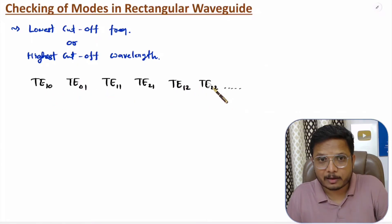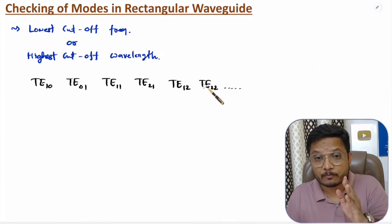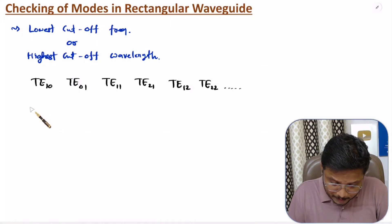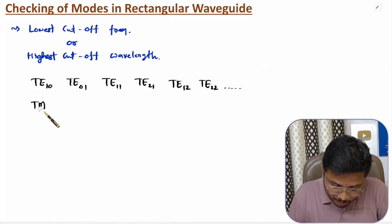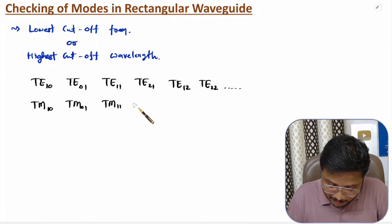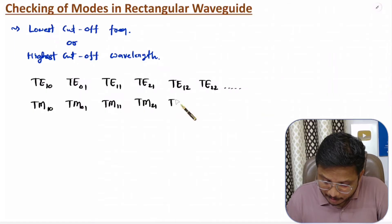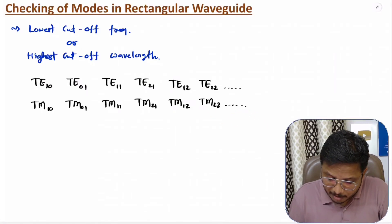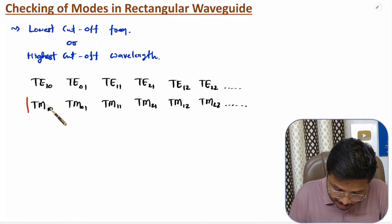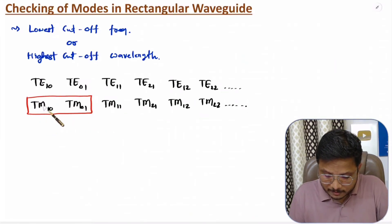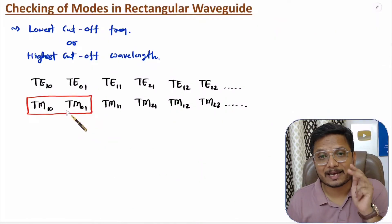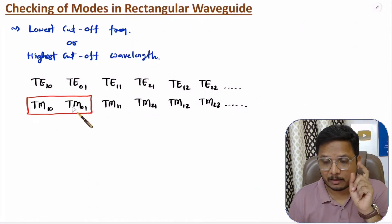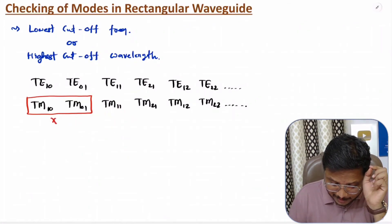The same ordering applies for TM modes, but there are important basics to understand. With TM mode, TM10 and TM01 are not possible — these are evanescent modes. So with TM mode, we do not need to check these modes as they are not possible.